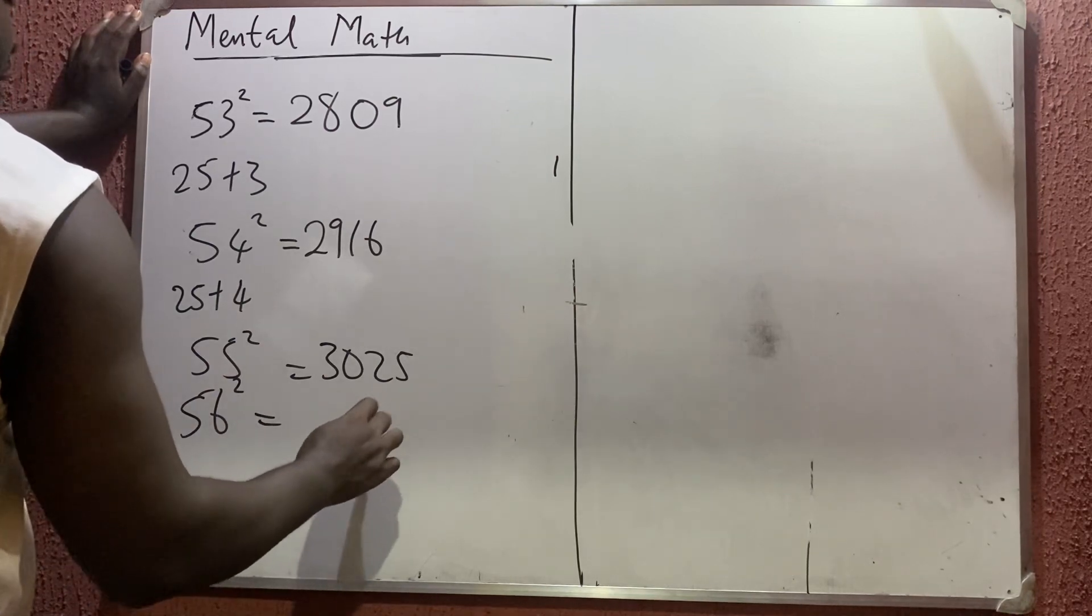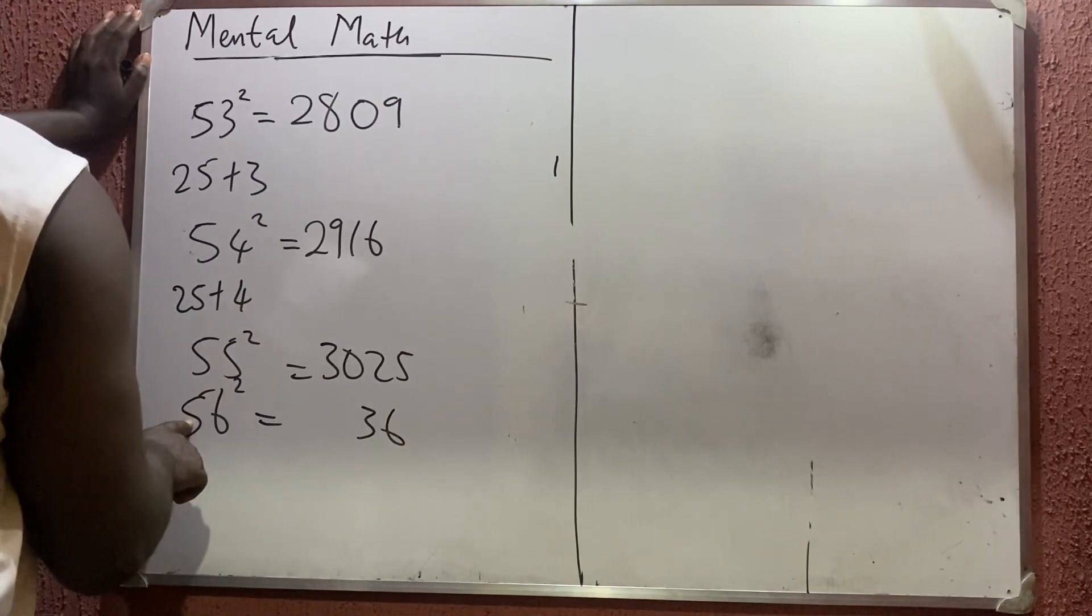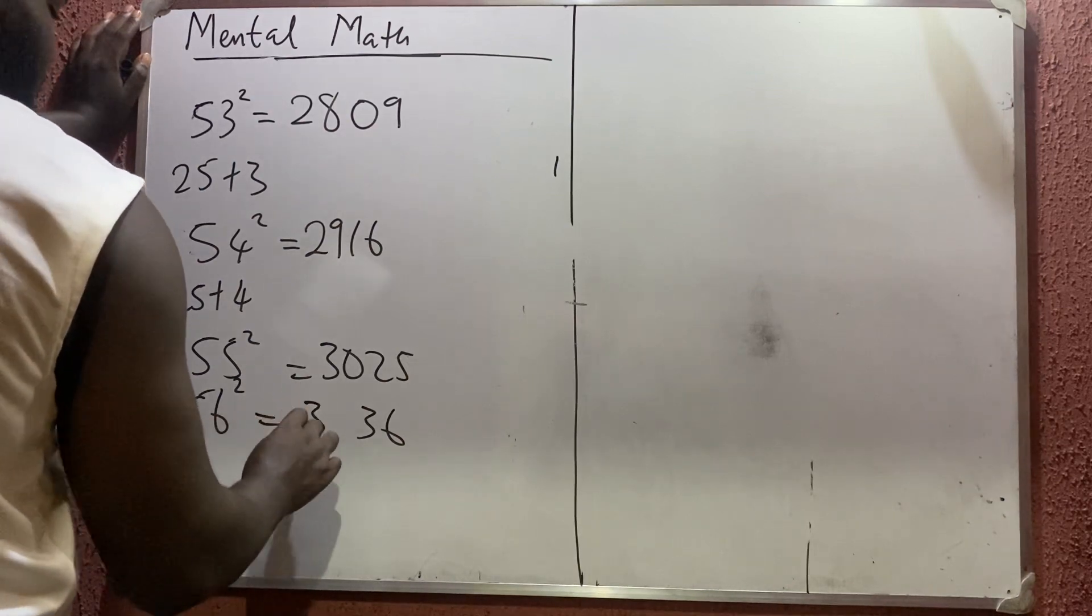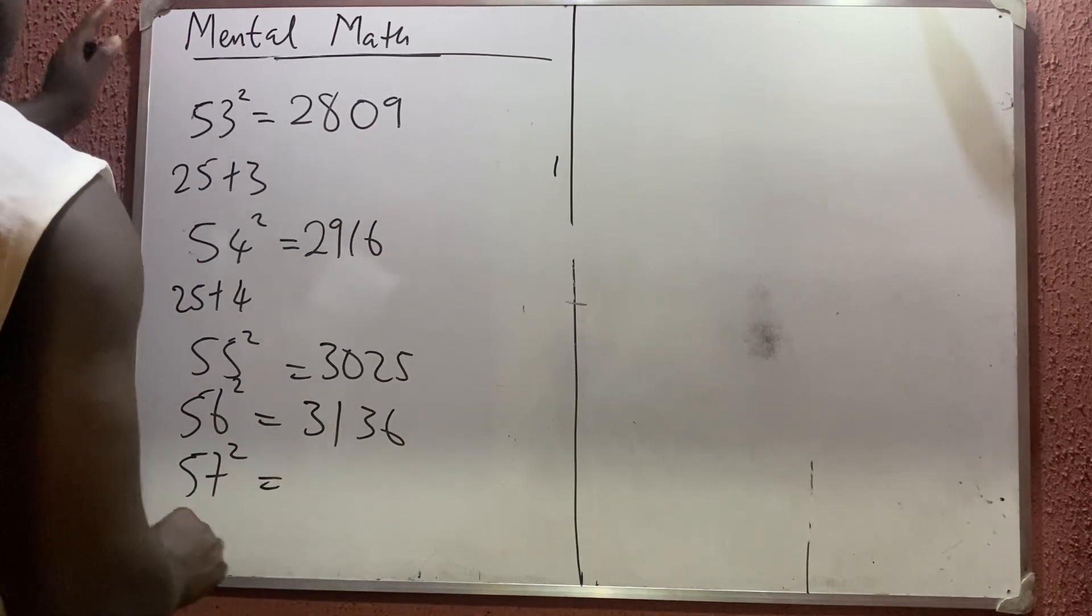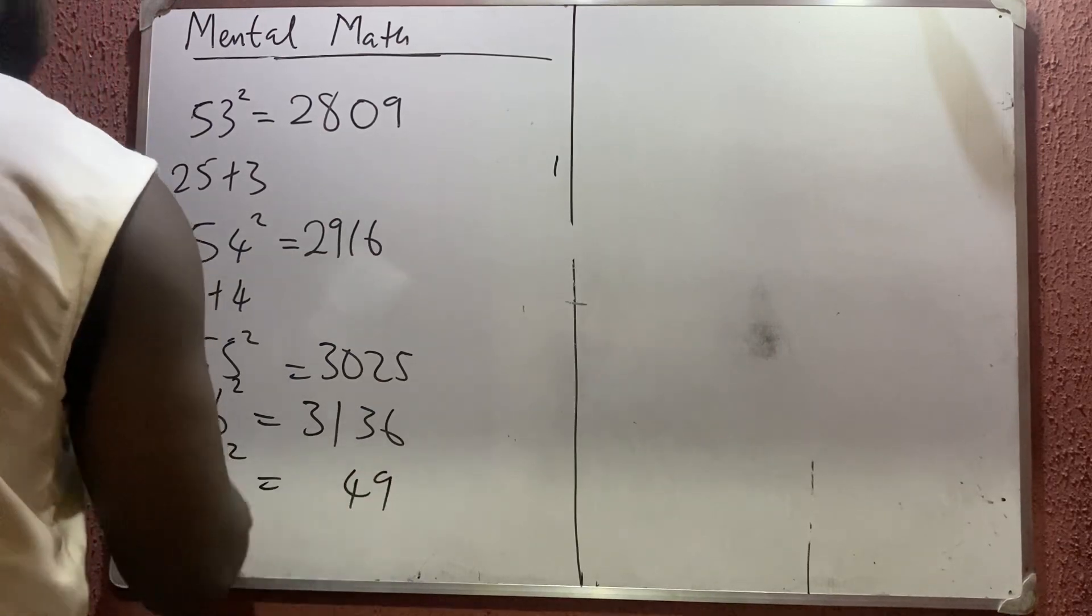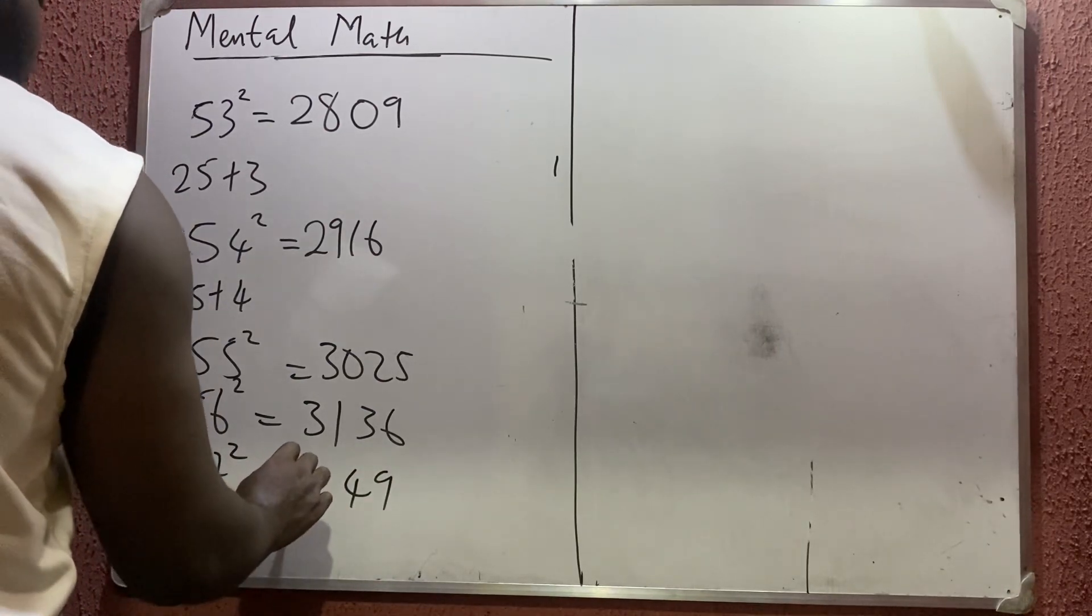The next one: 57 squared. 7² is 49. 5² is 25. 25 plus 7 will give you 32. So that is the answer.